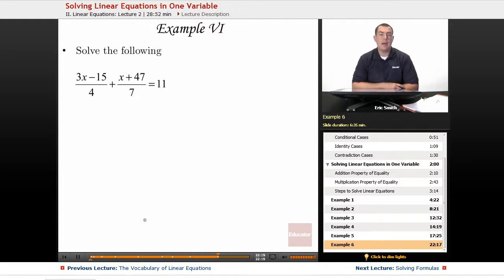Let's do one more. Here I have 3x minus 15 all over 4 plus x plus 47 all over 7 is equal to 11. So this one involves fractions.